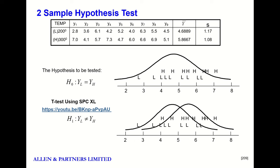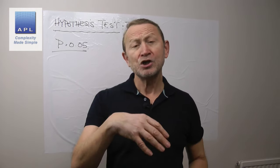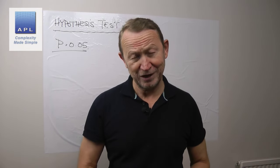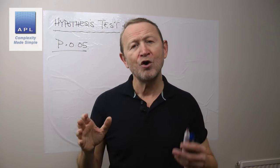What we have are two groups, two diagrams, essentially saying there are two potential states. The top state is that we've taken two samples from one big distribution — in other words, the process hasn't moved. Two sample results will always look different; even a static process produces different sample results. So are we looking at sampling error, or are we looking at a genuine shift?